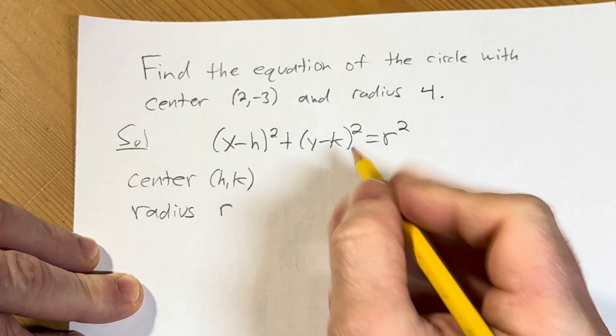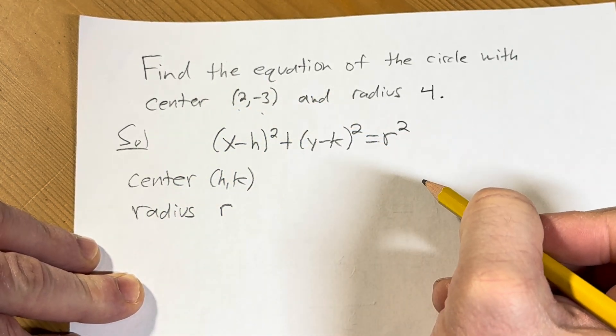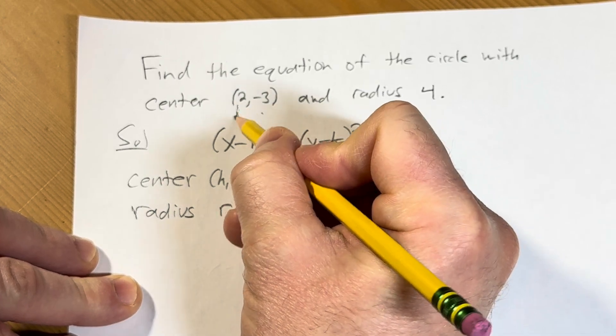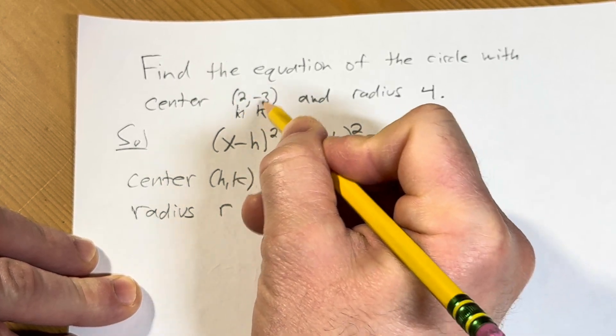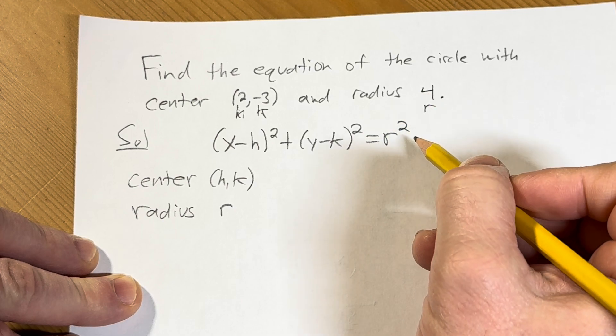In our particular example we have h is 2 and k is negative 3 and r is going to be 4.